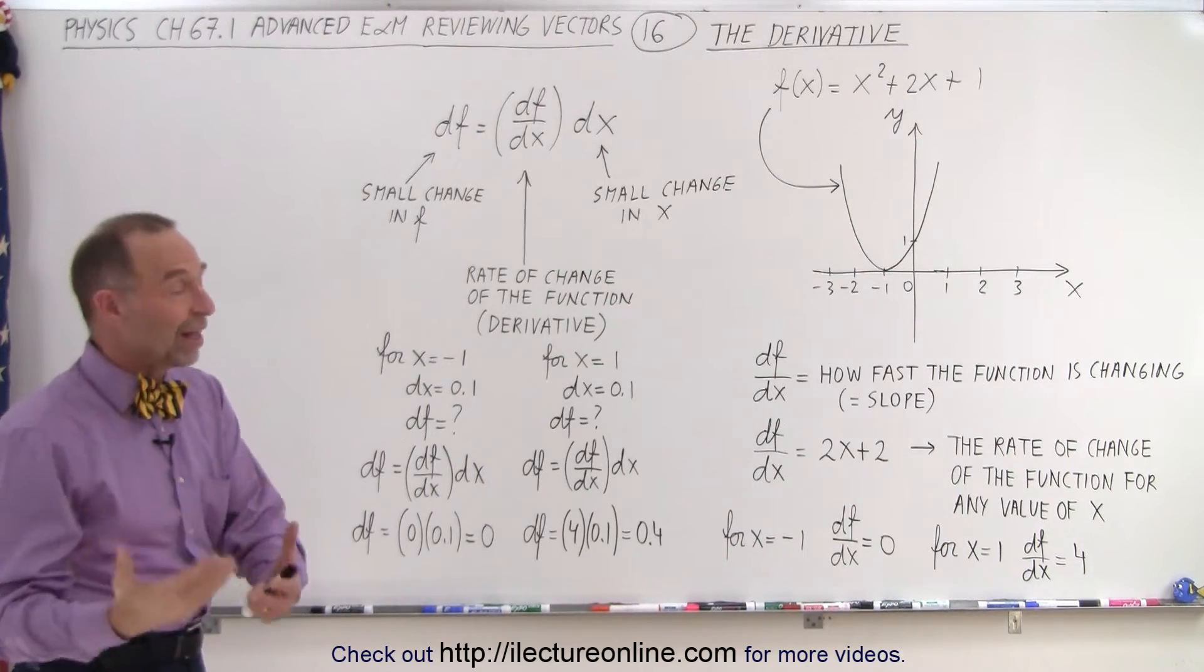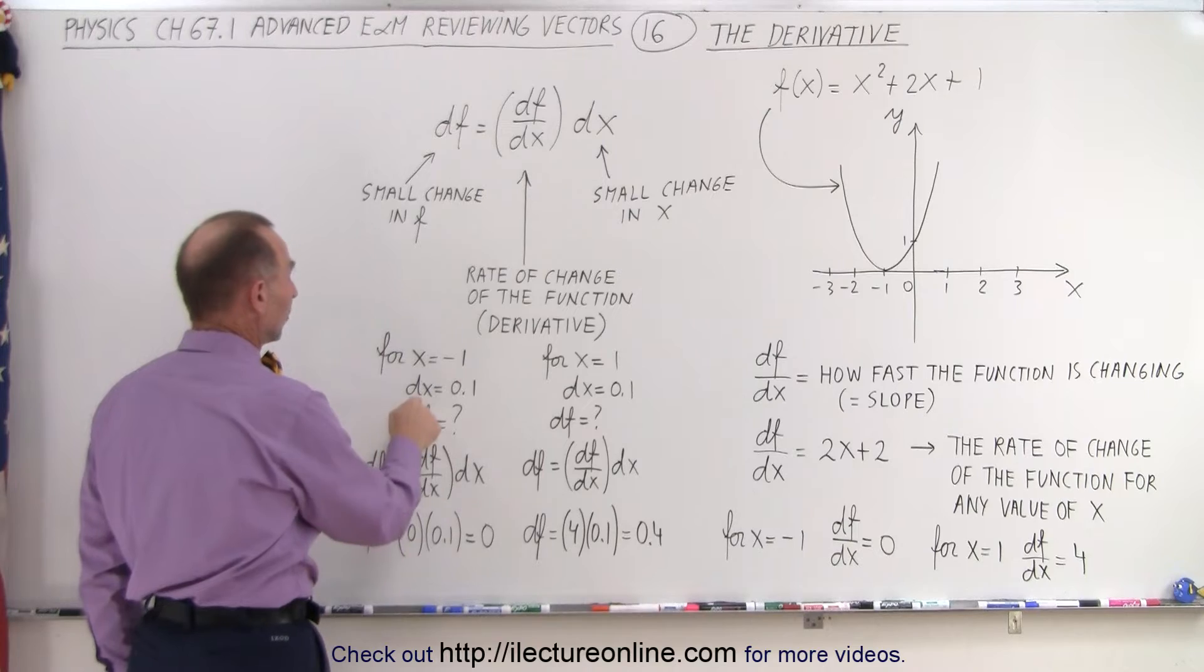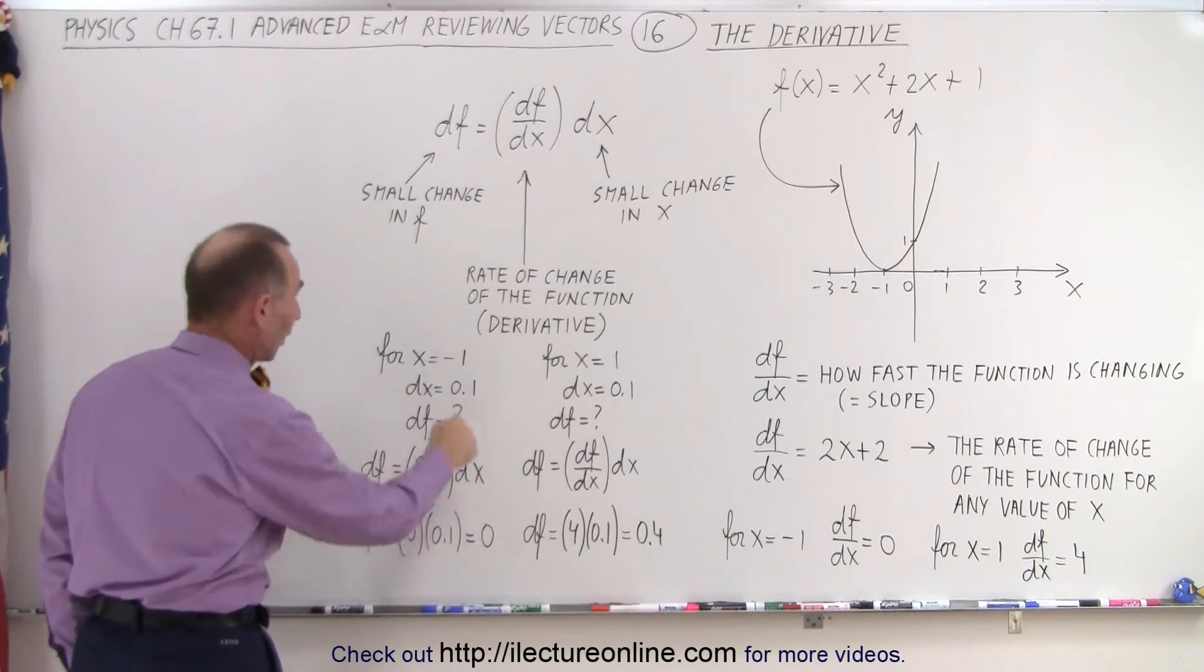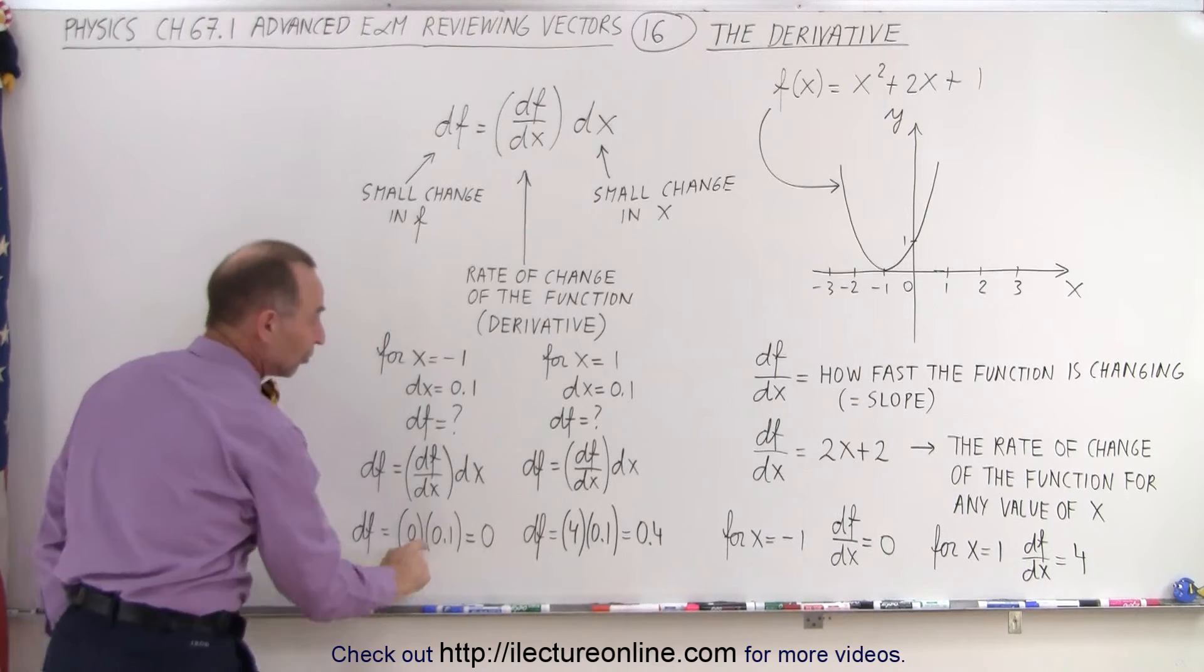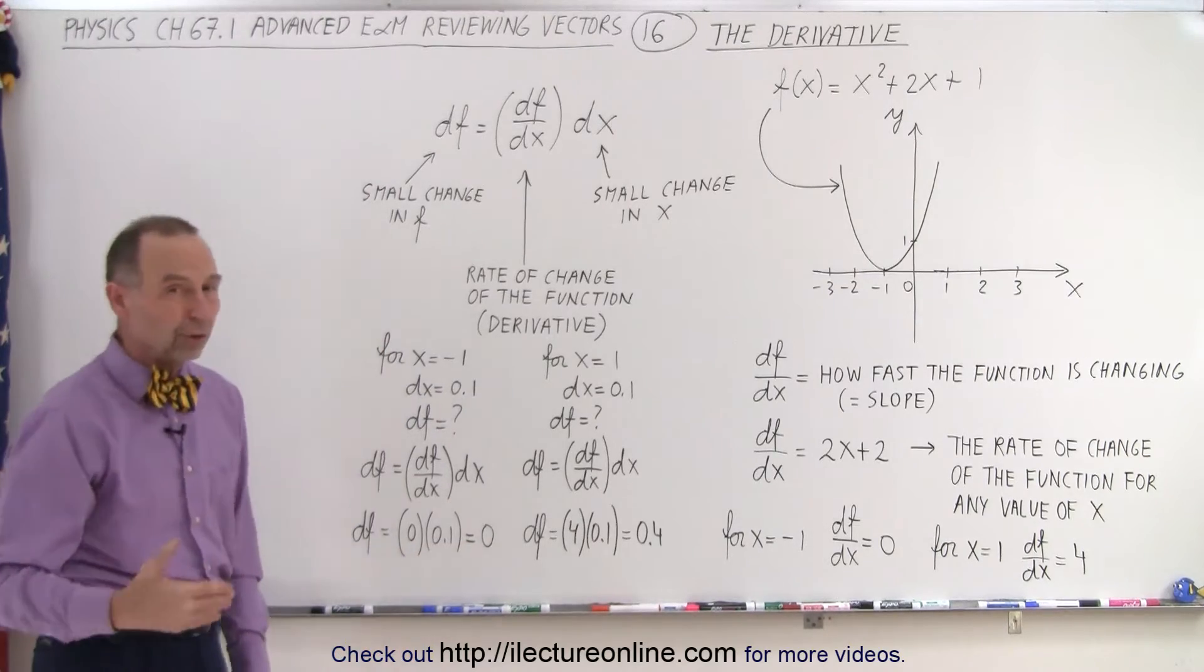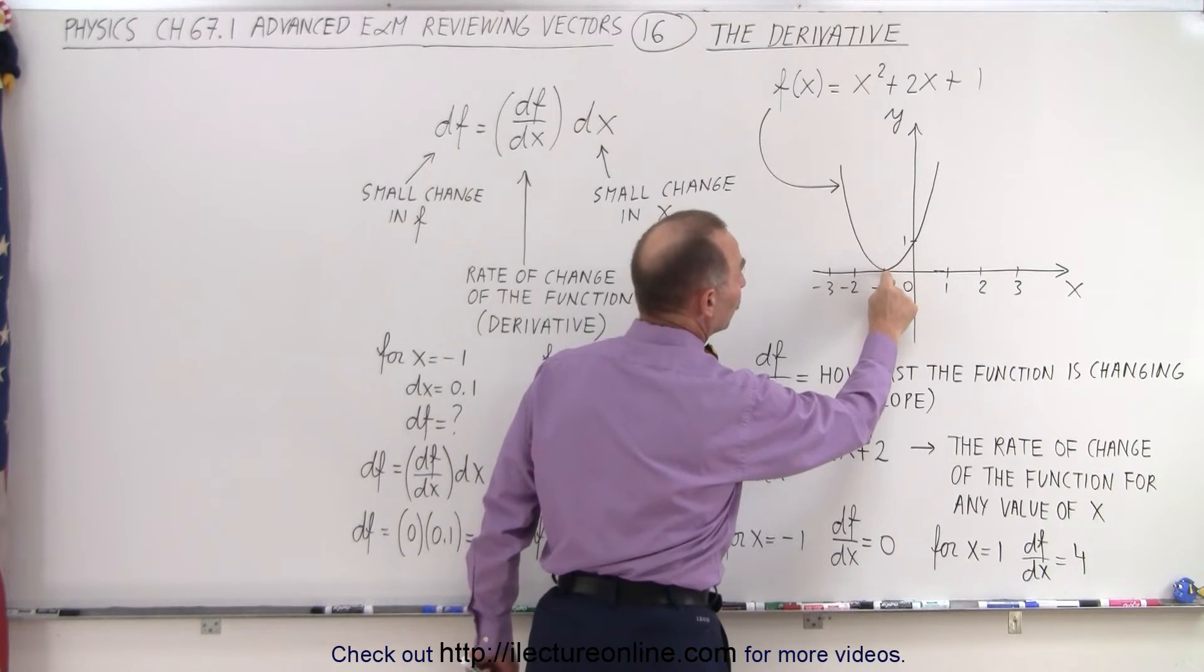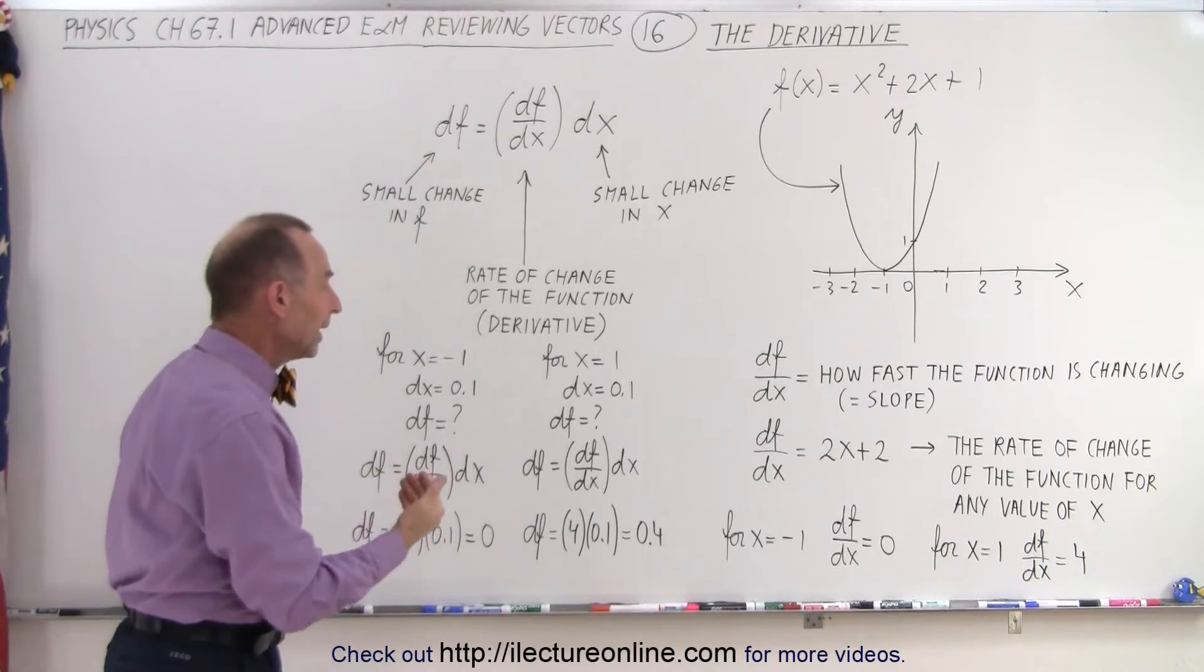Of course, that depends upon what value of x we want to consider. Here, for x is equal to negative 1, let's plug in a small change for x, dx, be 0.1. What is our df? So we can use this equation that we have over here. We plug in df/dx, which of course we know is equal to 0 for x equals negative 1. Multiply times 0.1, we get a small change in the function, which is also 0. In other words, if we're down here, we make a small change in x, that will cause a 0 change in the function.